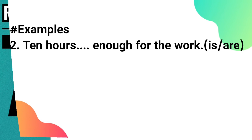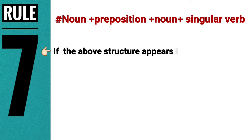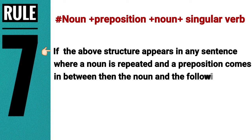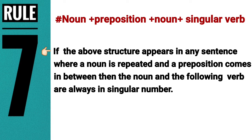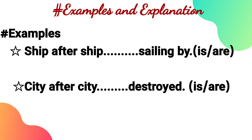The seventh rule involves the structure 'noun + preposition + noun,' where the same noun is repeated with a preposition in between. In such cases, the noun and the verb are always in singular form. For example, 'Ship after ship is sunk' and 'City after city is destroyed' — both take singular verb form.